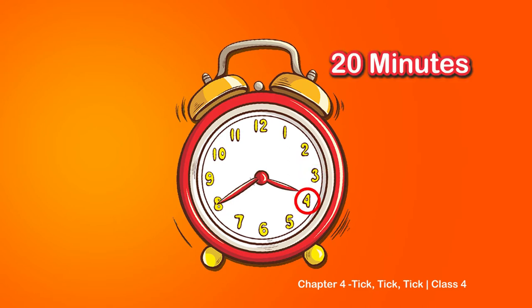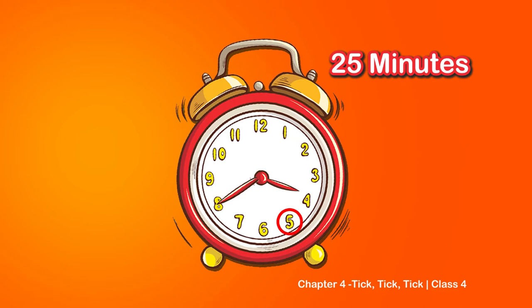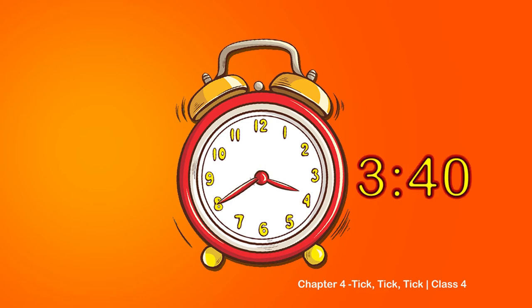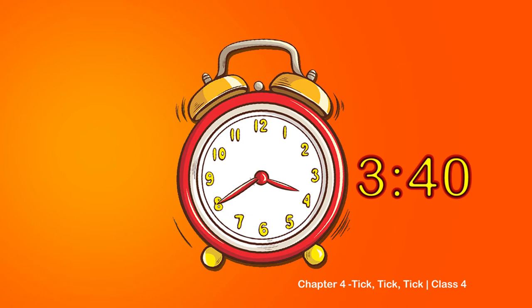Now you try: five - twenty-five, six - thirty, thirty-five, forty. So the time shown here by this clock is three forty. Look at the hour hand - it has come closer to four but has not reached four.